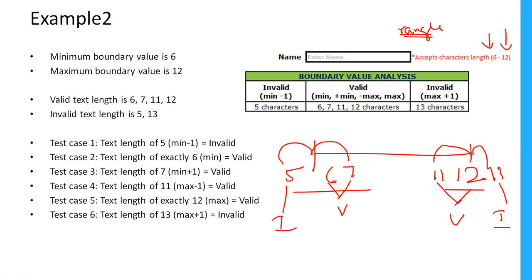Testing only these boundary values is more than enough to cover the entire function. The minimum boundary is 6 and the maximum is 12. Valid text lengths are 6, 7, 11, and 12 characters. Invalid lengths are 5 and 13 characters. We can write 6 test cases here.